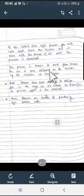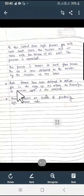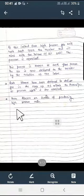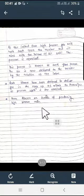Roots blower compressor have been designed to deliver gas in the range of 0.5 meter cube per minute to 1400 meter cube per minute at pressure up to 2 bar. These blowers are incapable of producing high pressure ratio.